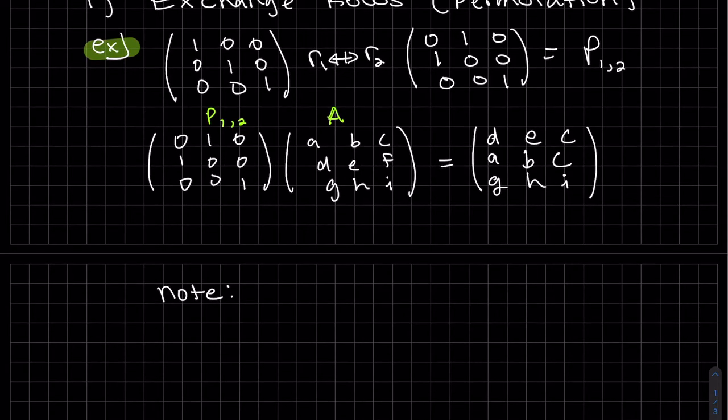I'd like to find the inverse. Well, think about it. If I exchange rows once and then I exchange them back, you're going to get the same matrix back. So if we do it twice, the inverse is itself.